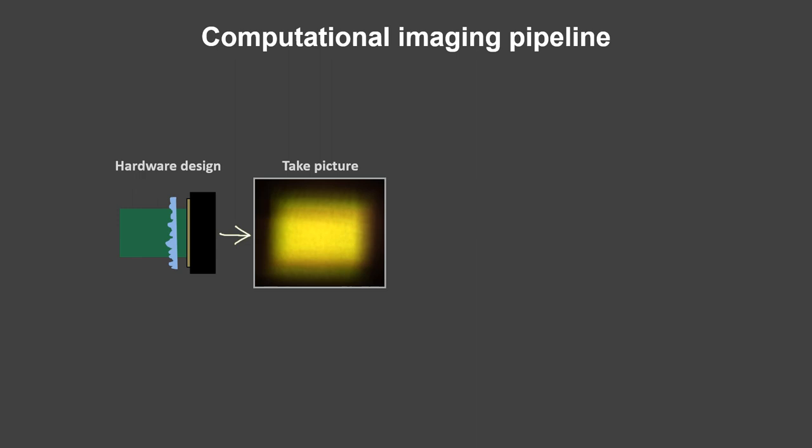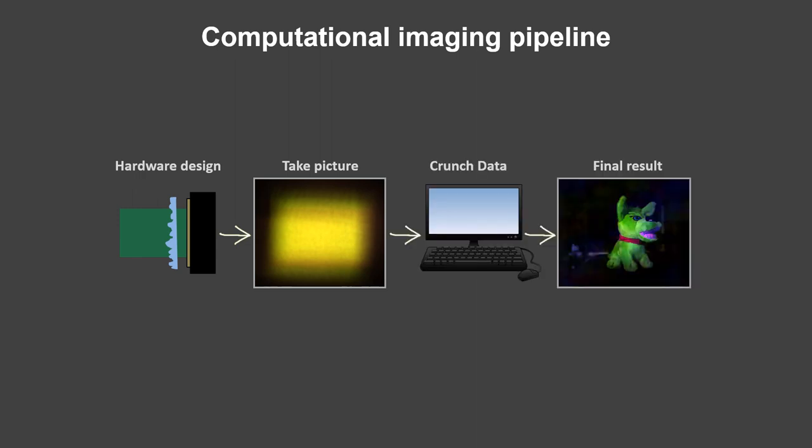You take a picture and it looks like total garbage, but this is carefully structured garbage. From this single image we can reconstruct our scene. We call this diffuser camera.